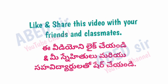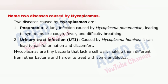Next important question: Name two diseases caused by mycoplasmas. Two diseases caused by mycoplasmas are: 1. Pneumonia, a lung infection caused by Mycoplasma pneumoniae, leading to symptoms like cough, fever, and difficulty breathing. 2. Urinary tract infection (UTI) caused by Mycoplasma hominis, which can lead to painful urination and discomfort. Mycoplasmas are tiny bacteria that lack a cell wall, making them different from other bacteria and harder to treat with some antibiotics.